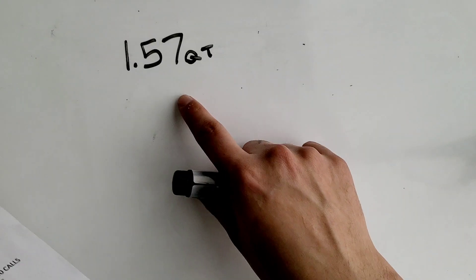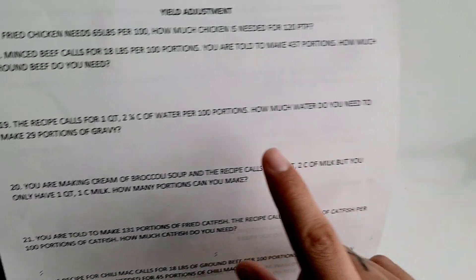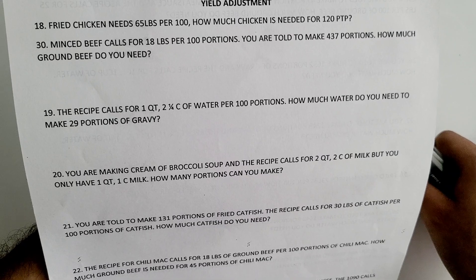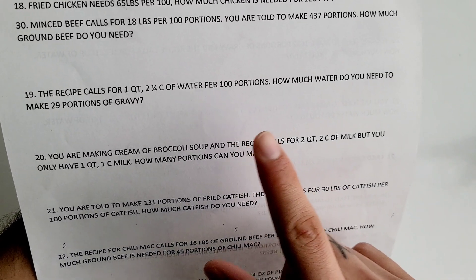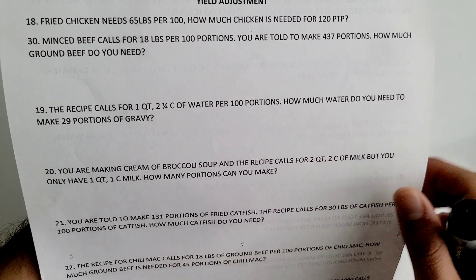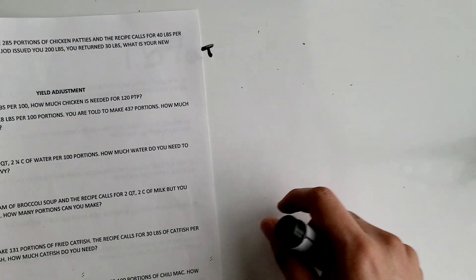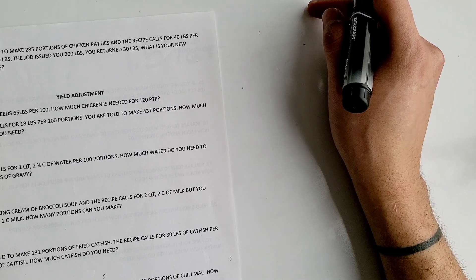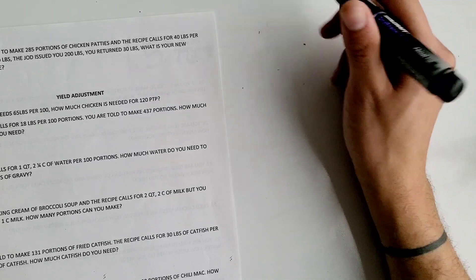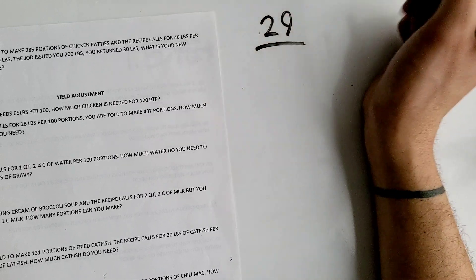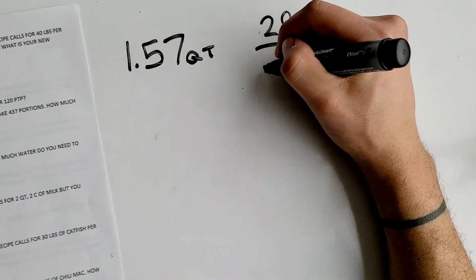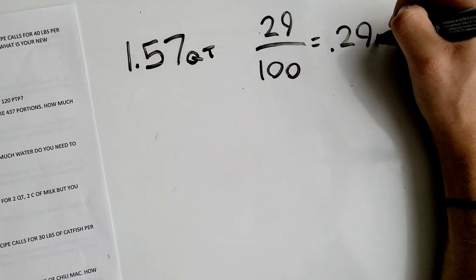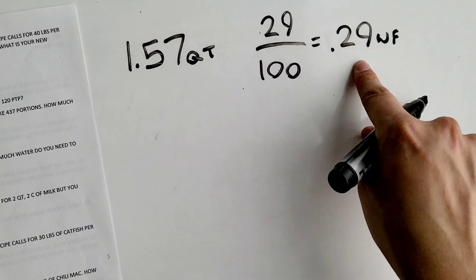Now that we have a single unit, we can move on. We need to find how much water to make 29 portions of gravy. To get our working factor, we divide the portions to prepare by 100. So 29 divided by 100 equals 0.29 — that is your working factor.